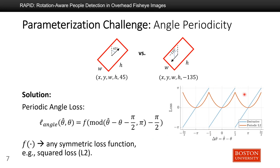In this figure, we plot an example of the periodic L2 loss and its derivative. We can see this loss function is continuous and piecewise convex. Although it's not differentiable at some points, we can avoid them by manually setting the derivatives at these points.